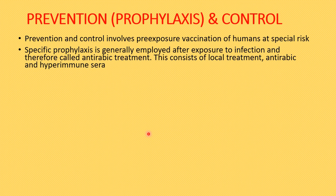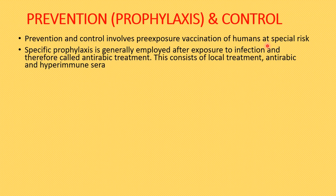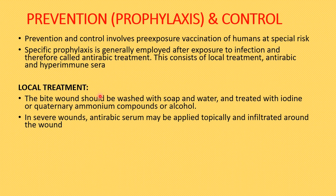Prevention and control involve pre-exposure vaccination of humans at special risk, such as veterinary and laboratory personnel, and post-exposure vaccination of humans bitten by a rabid animal. Specific prophylaxis is employed after exposure and is called anti-rabic treatment, which consists of local treatment, anti-rabic vaccines, and hyperimmune serum.